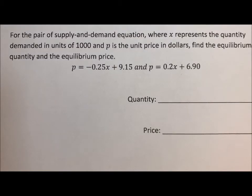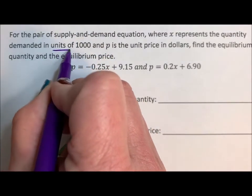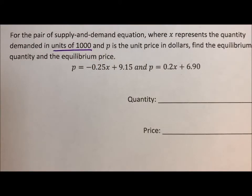For the pair of supply and demand equations where x represents the quantity demanded in units of a thousand and p is the unit price in dollars, find the equilibrium quantity and the equilibrium price.